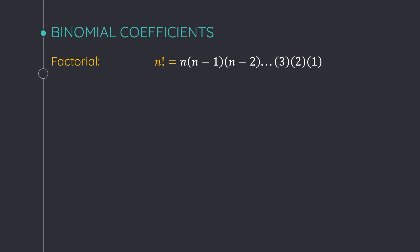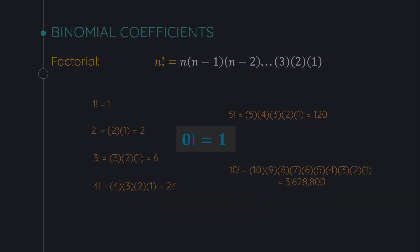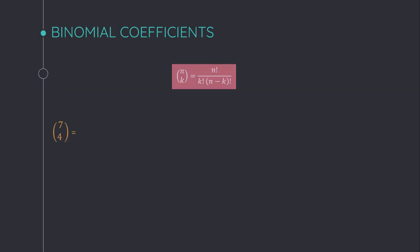Now let me explain factorial. What is factorial n? Factorial n is n times (n minus 1) times down to 1. Some examples: factorial 1 is 1; factorial 2 is 2 times 1, which is 2; factorial 3 is 3 times 2 times 1, which is 6. Similarly you can find factorial 4, 5, and any numbers. You also need to know that factorial 0 is always 1.